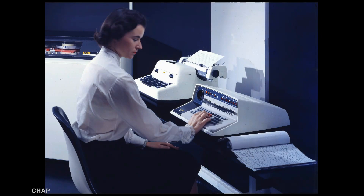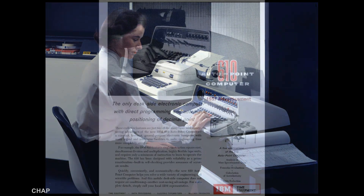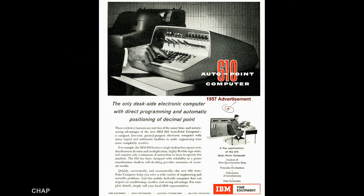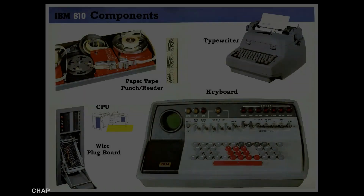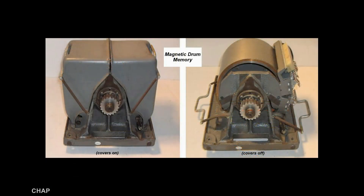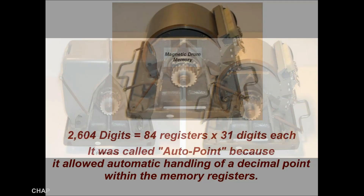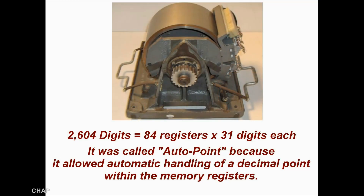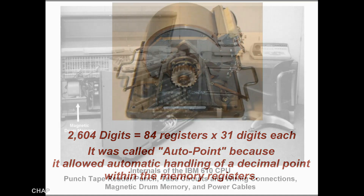The 610 machine was not brought to market until 1957. The components of the machine included the keyboard, paper tape punch and reader, wire plug board, typewriter, and the computer CPU itself, which contained the rotating magnetic drum memory. The 610 had 2,604 digits of magnetic drum memory and 84 internal registers of 31 digits each. It was called AutoPoint because it allowed automatic handling of the decimal point within the memory registers.